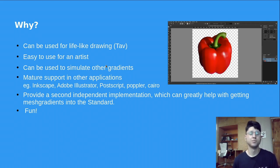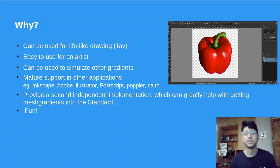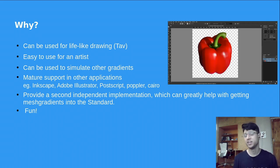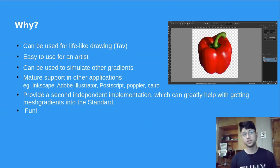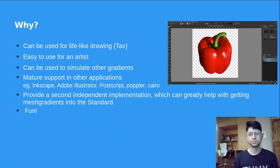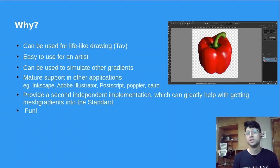Another feature of mesh gradients is that we can use them to simulate other types of gradients, so it's not just one thing. Another motivation is that it's a fairly mature standard — it exists in PDF, PostScript, Cairo, Inkscape supports it, Adobe Illustrator supports it. And another motivation was to provide a second implementation: right now mesh gradients aren't part of the SVG2 specification because it hasn't been released — it's part of the draft. With the help of a second implementation, it could help get it into the standard, which will benefit artists.